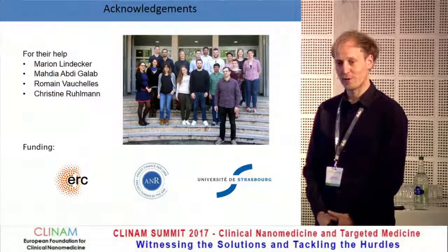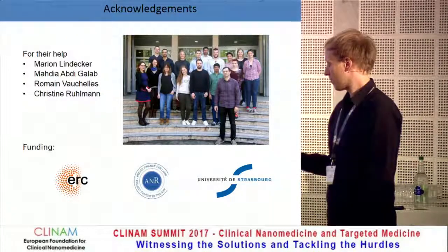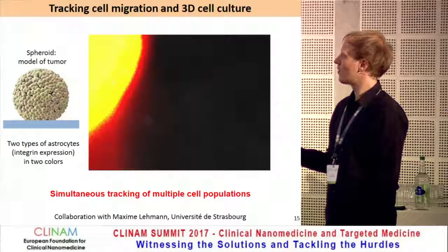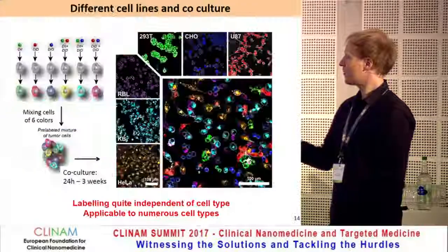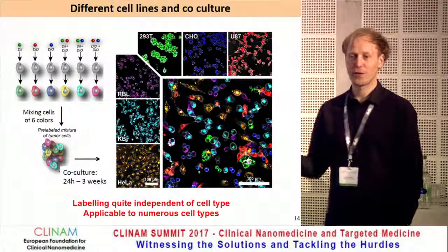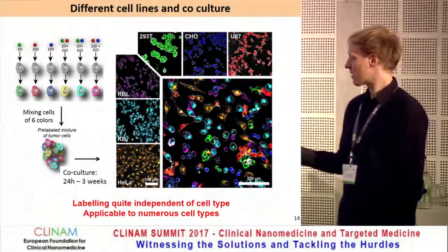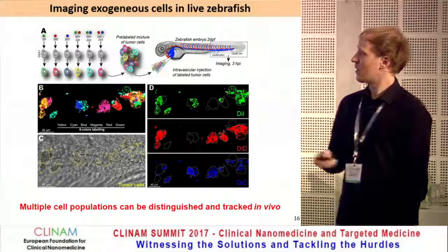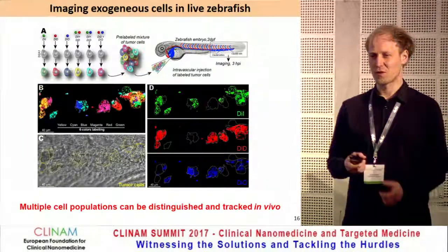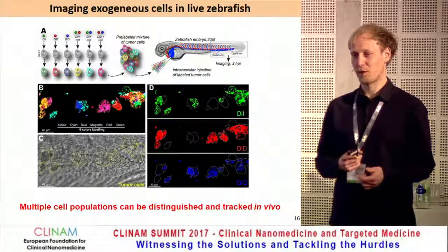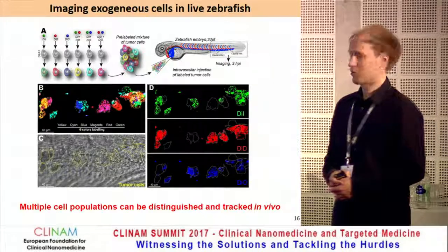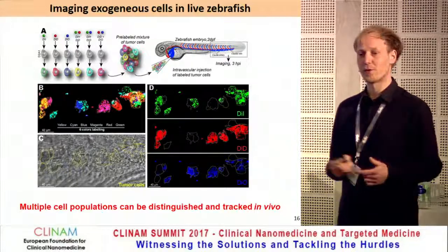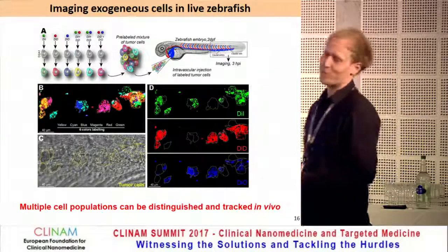How many different cell lines have you tried using that method? We tried cancer cell lines — several of them — and we also tried stem cells. T cells or some sort of immune cell? Not for the moment, but it just depends a little bit on the biological collaborators we have.